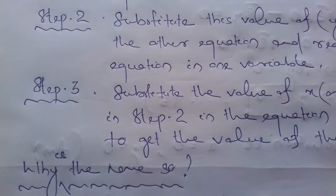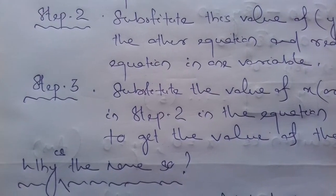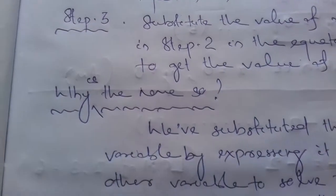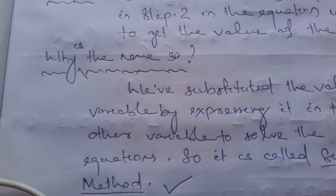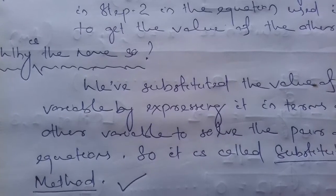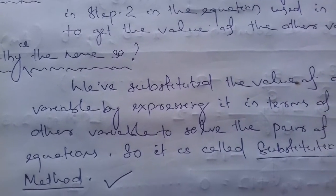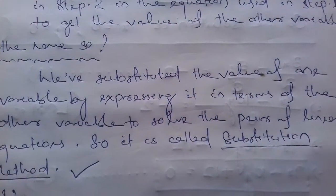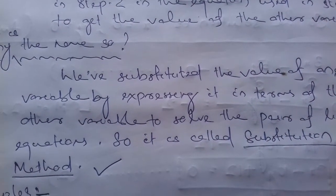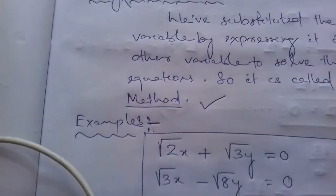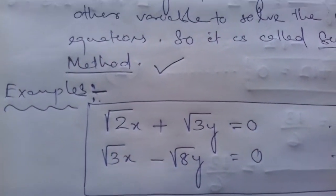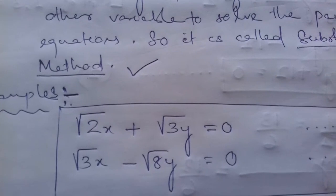Students, you must be thinking why is it called substitution method. The reason is we are substituting the value of one variable and expressing it in terms of the other variable — that's why it is known as substitution method. Let's discuss one example.